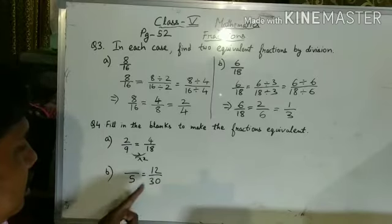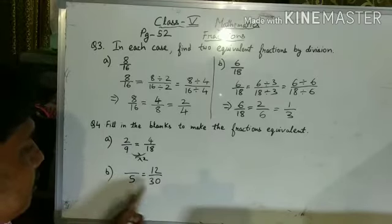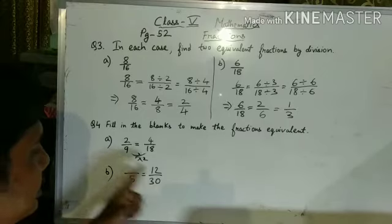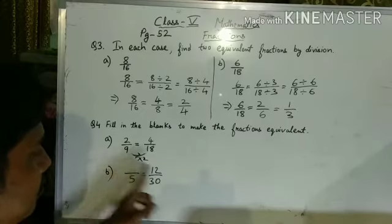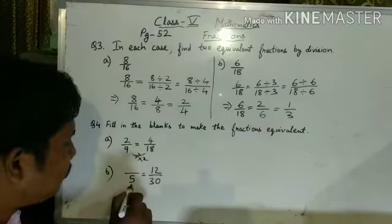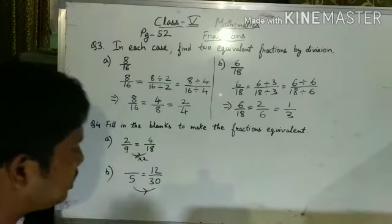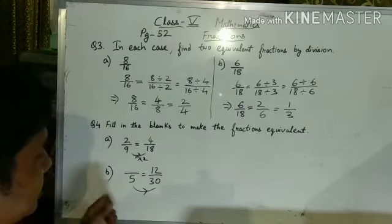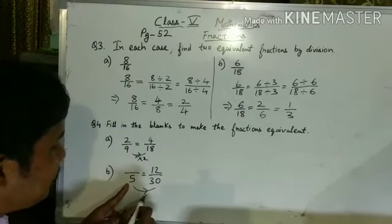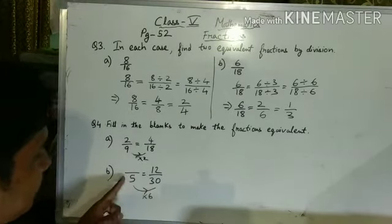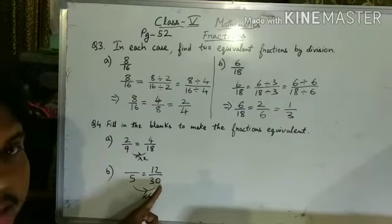In this question, denominators are given 5, 30. Numerator is not given. This one is not given, but this is given. So, what we have to do? So, this 5 has changed to 30. How it has changed? If we multiply 5 with 6, 5 with 6, then we get 30. 5, 6 are 30.